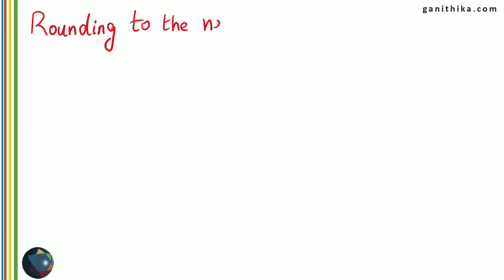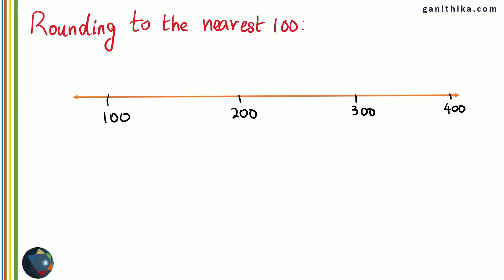Now let's round off numbers to nearest 100s. Let's consider the 100s on the number line: 100, 200, 300, 400. Basically you will be picking up 50 numbers on either side of each of these 100s and they will contribute to that particular 100. Say for example, if you have 50 to 149, these 100 numbers will be rounded off to 100.